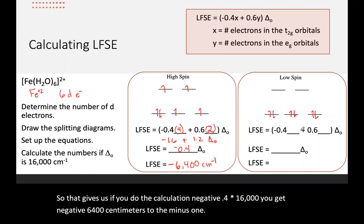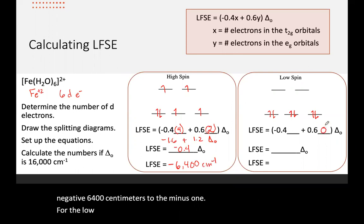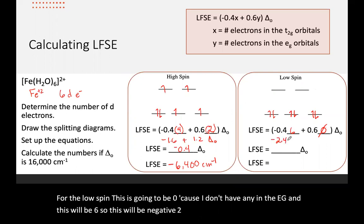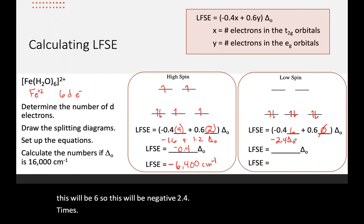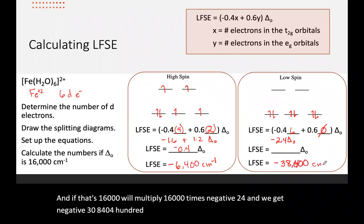For the low spin, this is going to be zero because I don't have any in the eg, and this will be six. So this will be negative 2.4 times delta O. And if that's 16,000, we'll multiply 16,000 times negative 2.4 and we get negative 38,400 centimeters to the minus one.